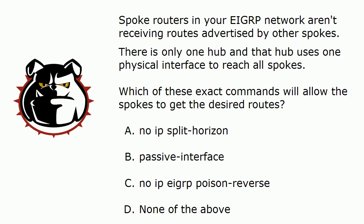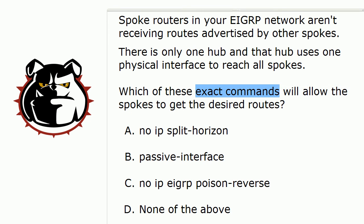Spoke routers in your EIGRP network aren't getting routes advertised by other spokes. The clue — only one hub using one physical interface to reach all spokes — tells us the problem is split horizon. But when I ask which exact commands fix this, the answer is D: none of the above. With EIGRP-related commands, you need to specify EIGRP and the autonomous system number.